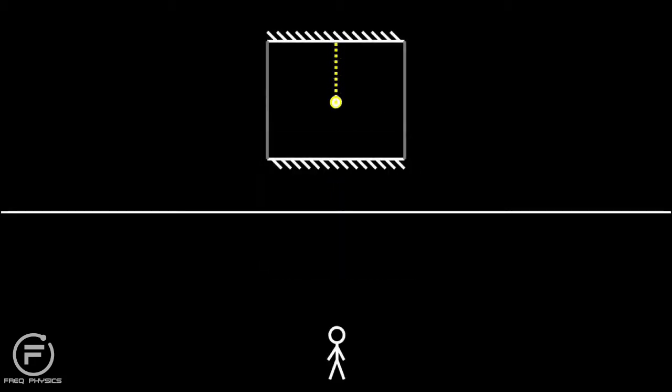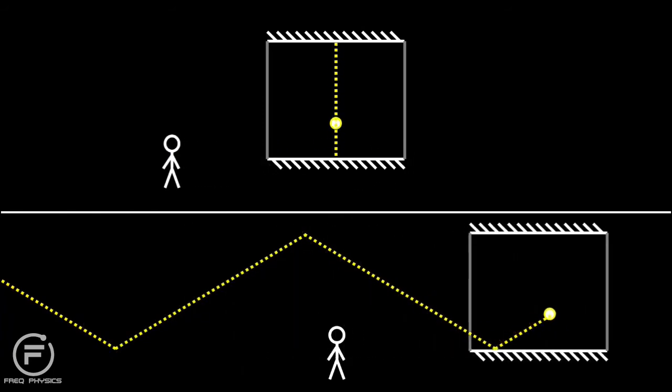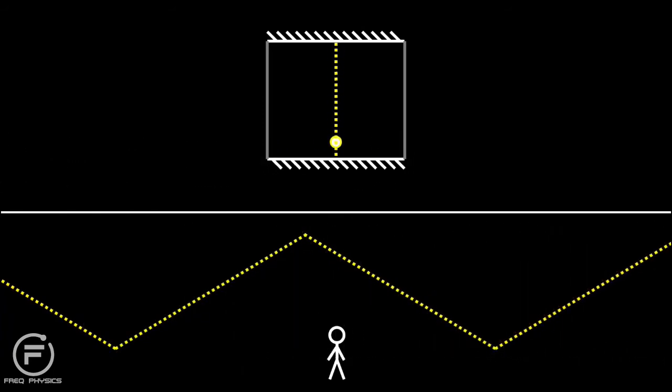Let's set one of these clocks in motion. Inside its own frame of reference, the clock still ticks every second. However, from outside, the light has to take a longer diagonal path. Since the light must still travel this increased distance at the same speed, it must take more time.